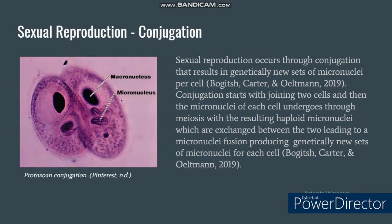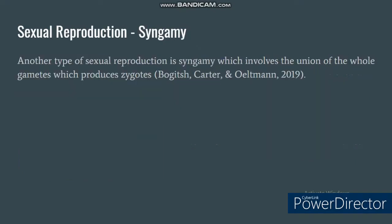Sexual reproduction is also observed in protozoans. Exhibited by ciliophorans is conjugation, which begins when two cells join together and each of their micronuclei undergoes meiosis, resulting in the exchange of haploid nuclei, which finally forms genetically new sets of micronuclei for each cell. There is also another type of sexual reproduction called syngamy, which involves the union of gametes to produce zygotes. In conjugation, only a portion of the microorganism is involved in reproduction, but in syngamy, it involves the whole cell to produce an offspring.